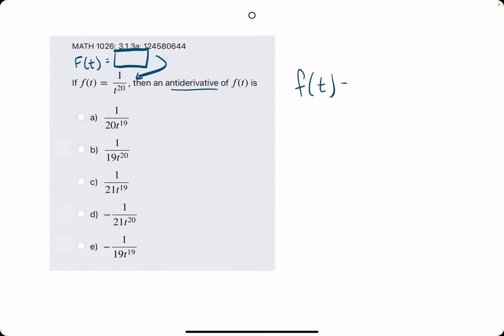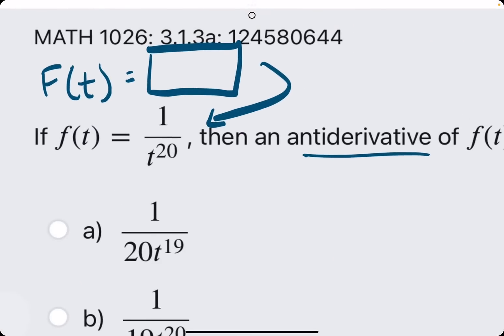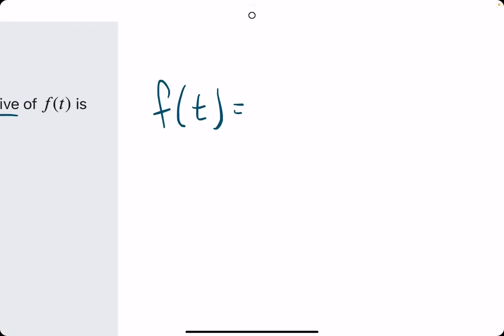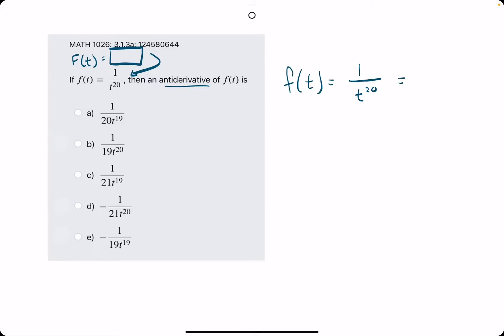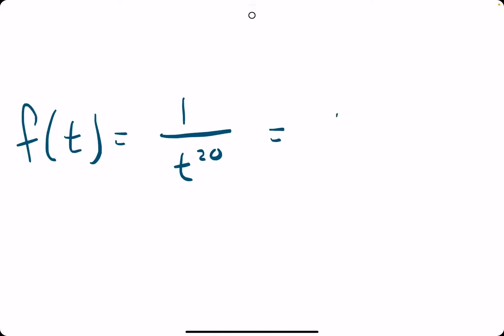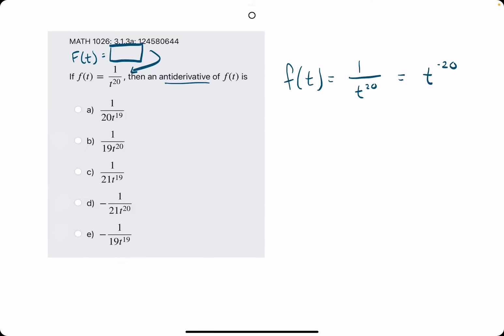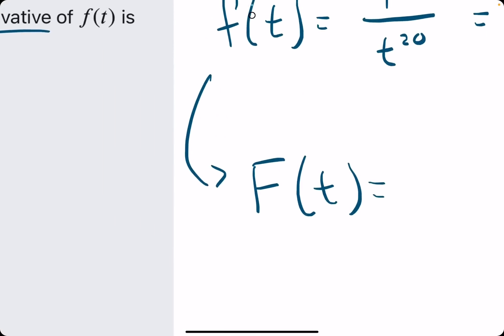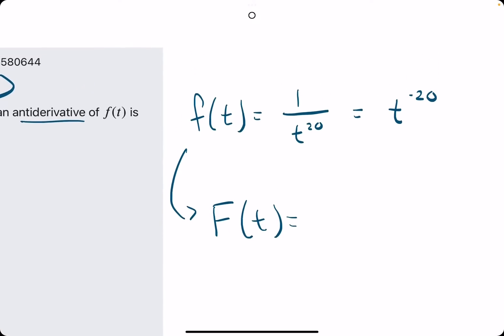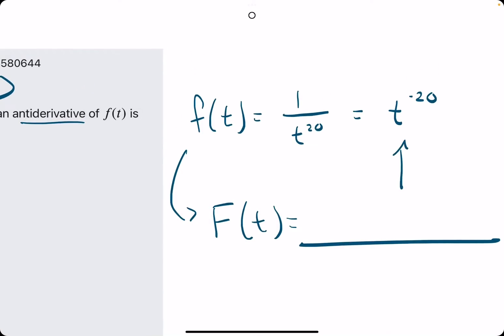First, just as if we were taking the derivative of 1 over t to the 20th, we want to rewrite it so that the t is no longer in the denominator. With the help of negative exponents, this is equivalent to t to the negative 20th. So, now we want to find capital F of t. Again, this is the anti-derivative. If we take the derivative of this, we should get this.